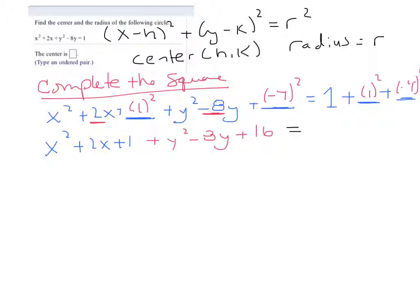And this equals on the right-hand side, 1 squared is 1, and then negative 4 times negative 4 is positive 16. So my next step is to look at this in terms of grouping.